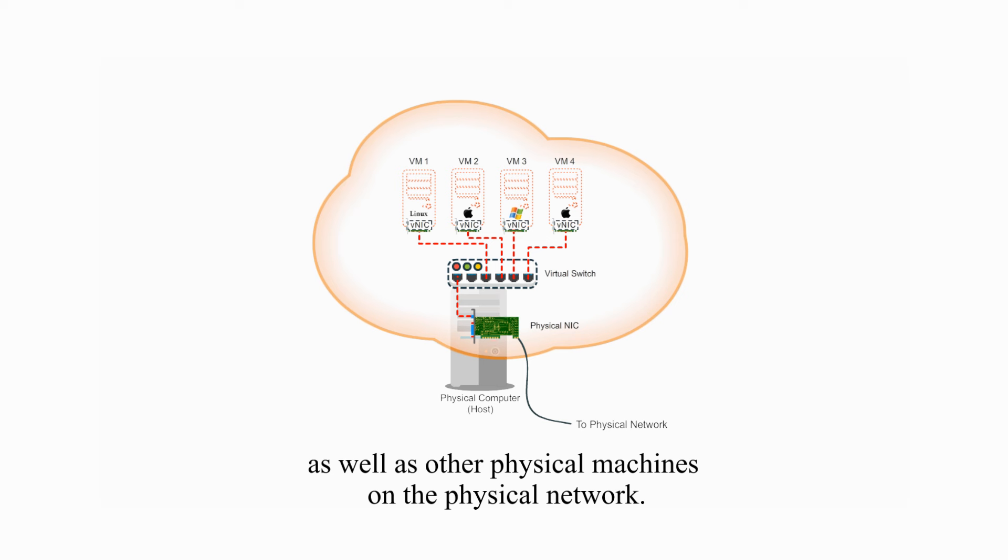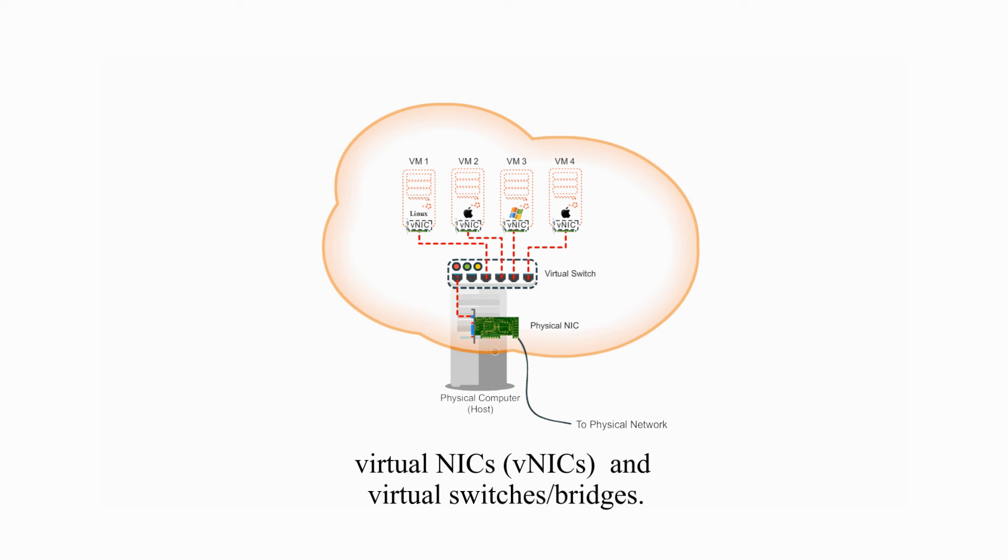Virtual machines can communicate with each other on the host as well as other physical machines on the physical network. To do so, virtual machines need two virtual things: virtual NICs and virtual switches or bridges.